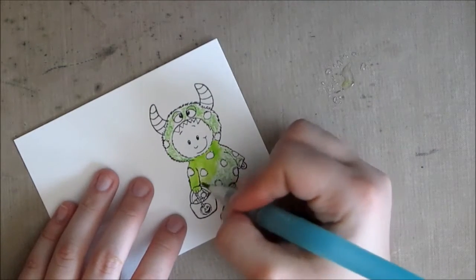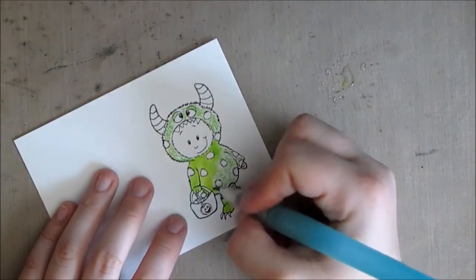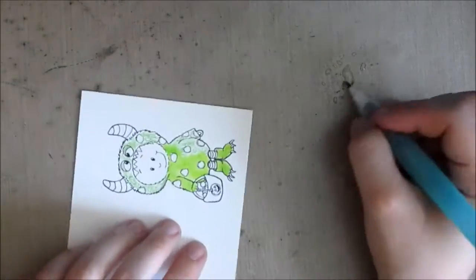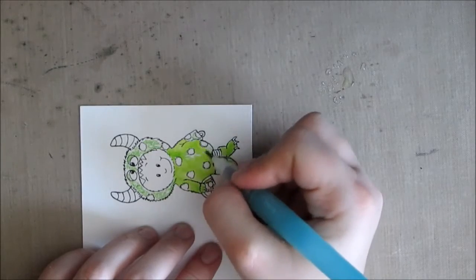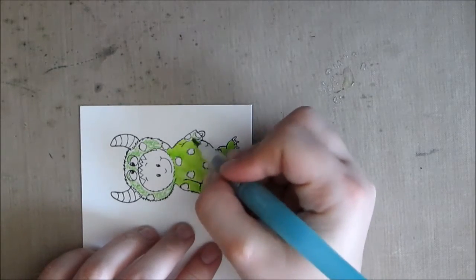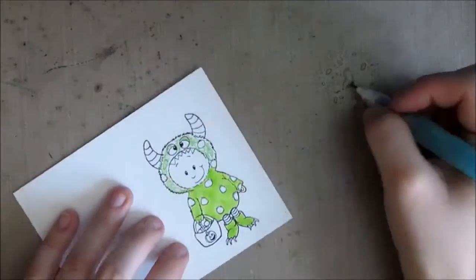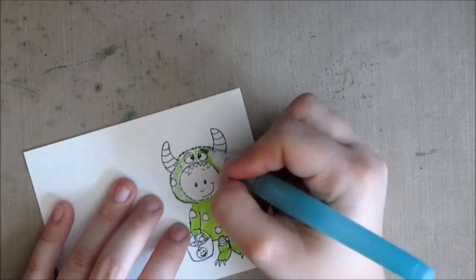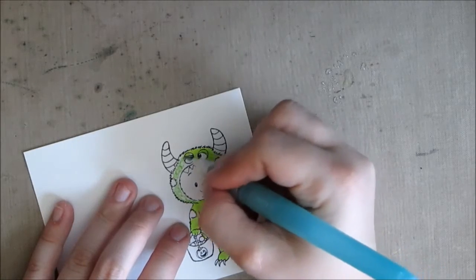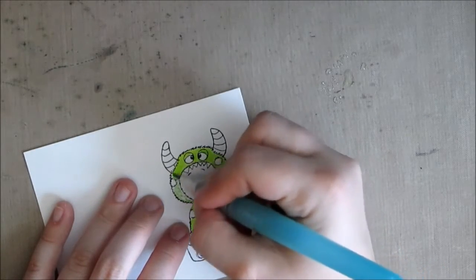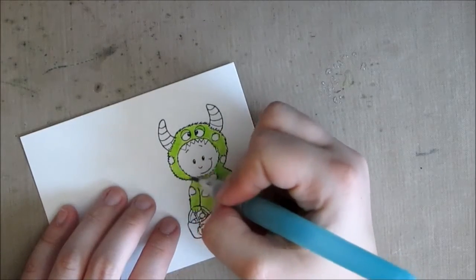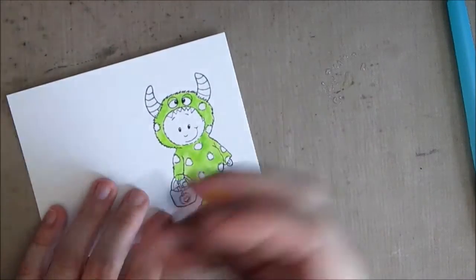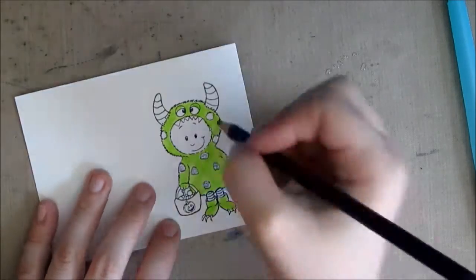There are some things to consider with Inktense pencils. Inktense pencils are more inky, which is what leads to their intense color, but because of that, they don't blend out the way that watercolor pencils will. Watercolor pencils with enough water can basically be erased. That's not true with Inktense pencils. Once they're dry, they're dry and you're not going to be able to get them out and you're not going to be able to do too much blending once they're dry.